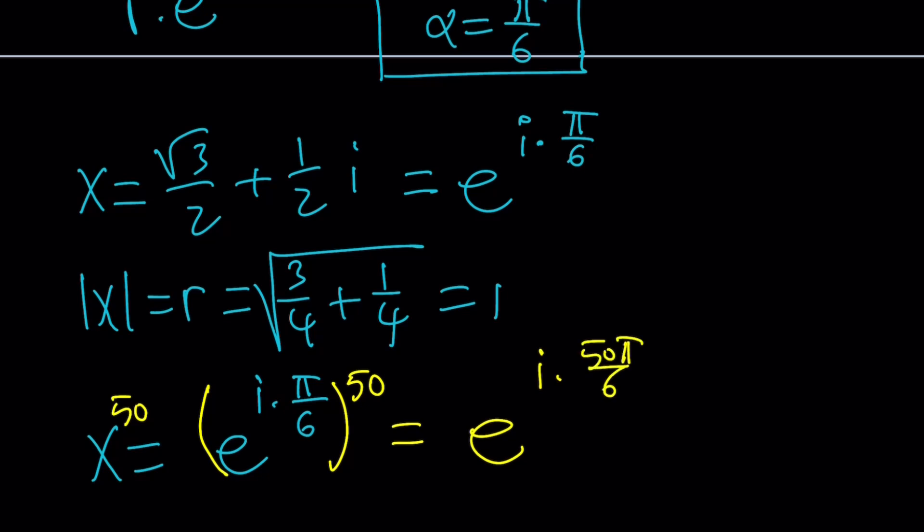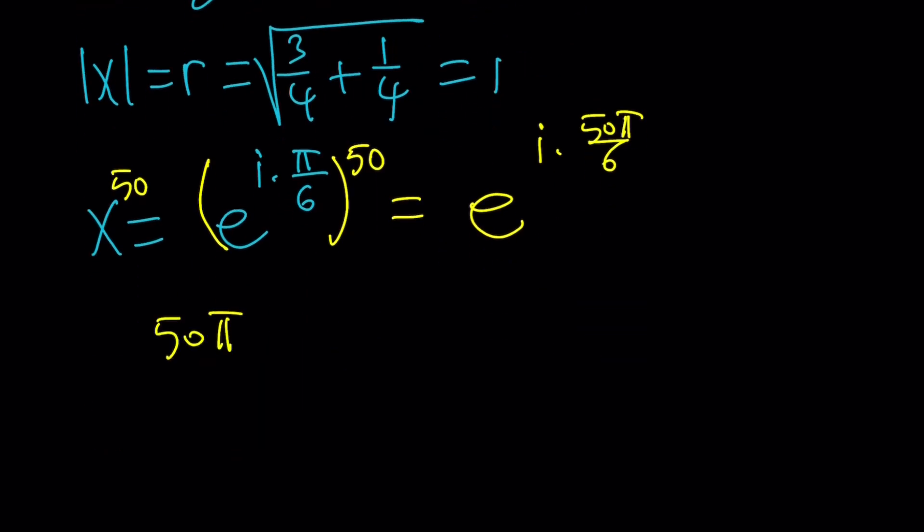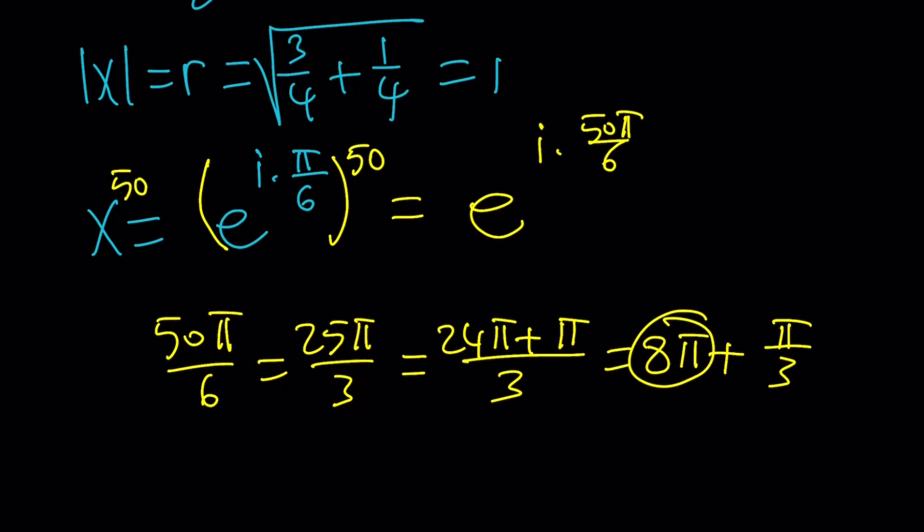And 50 pi over 6 actually can be simplified. We can write it as 25 pi over 3. 50 pi over 6 is 25 pi over 3, and that's actually 24 pi plus pi over 3, which is 8 pi plus pi over 3. Now notice that 8 pi is just going to give you 0 on the unit circle. So we only have to consider pi over 3 if we're looking at the principal value. And this is going to turn into e to the power i pi over 3.